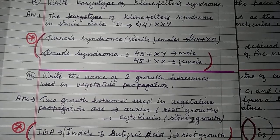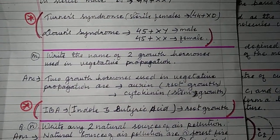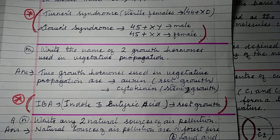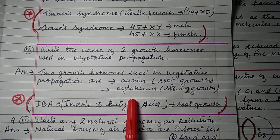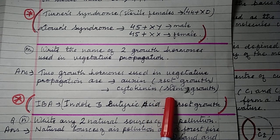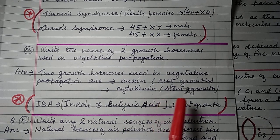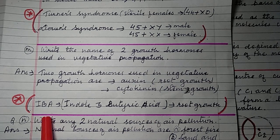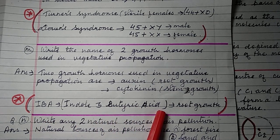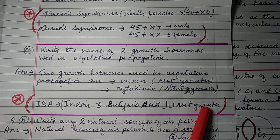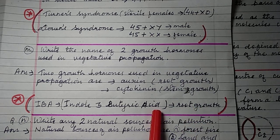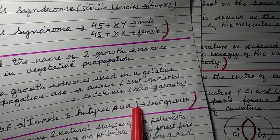Question 1M: Write the names of two growth hormones used in vegetative reproduction. The two growth hormones used in vegetative reproduction are auxin, which helps in root growth, and cytokinin, which helps in stem growth. Another hormone used is IBA (indole-3-butyric acid), which is also a rooting hormone and helps in root growth.